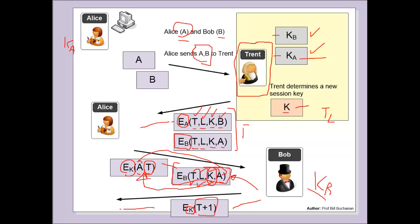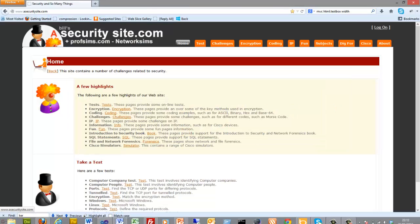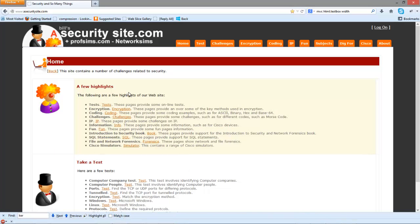He sends that back and Alice is then able to decrypt it because she knows the session key and checks the time. So let's have a look at an example of this.